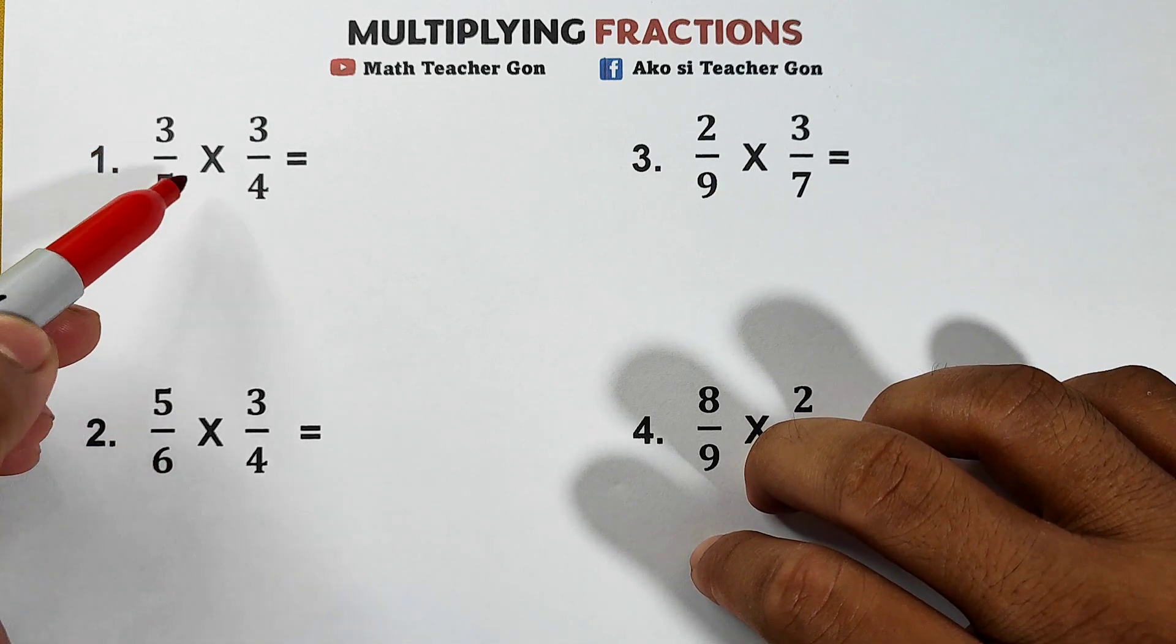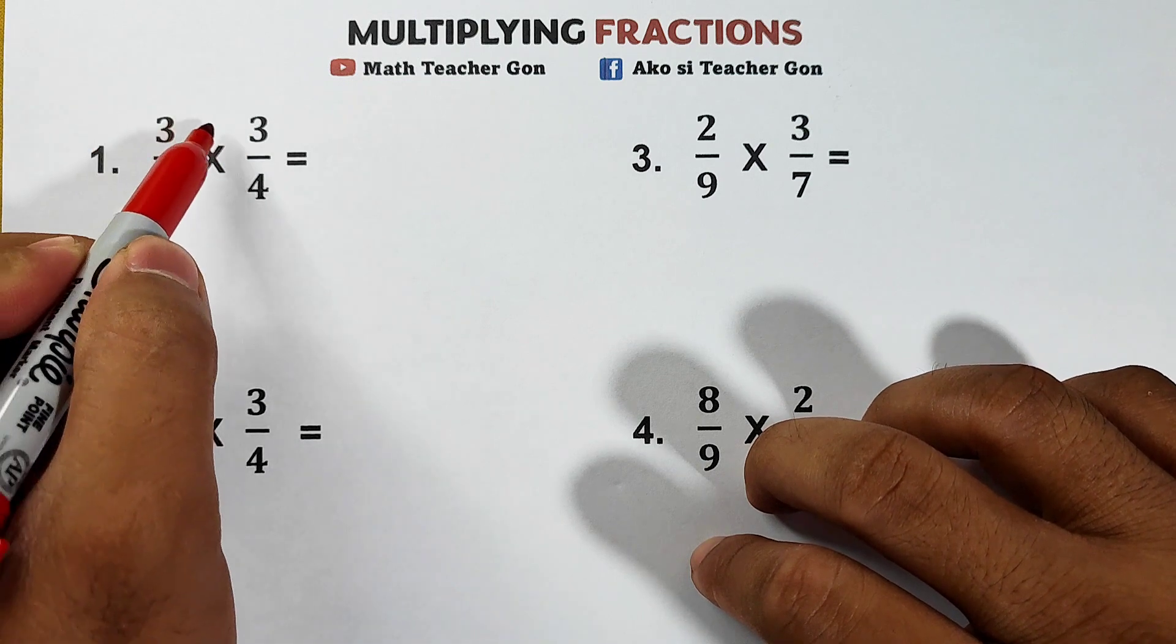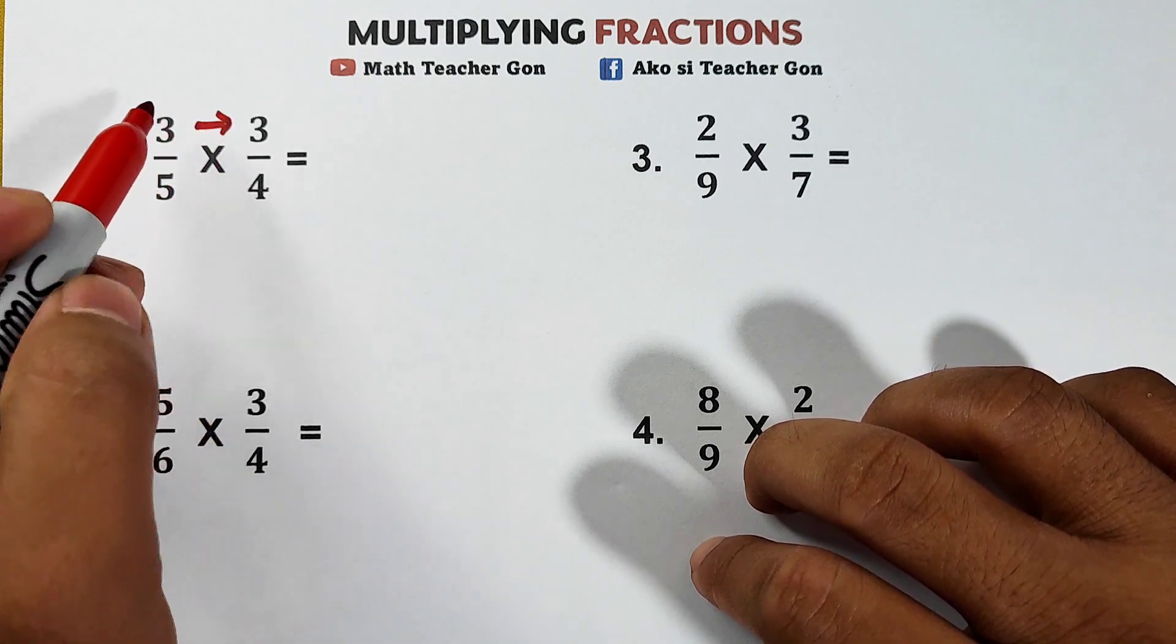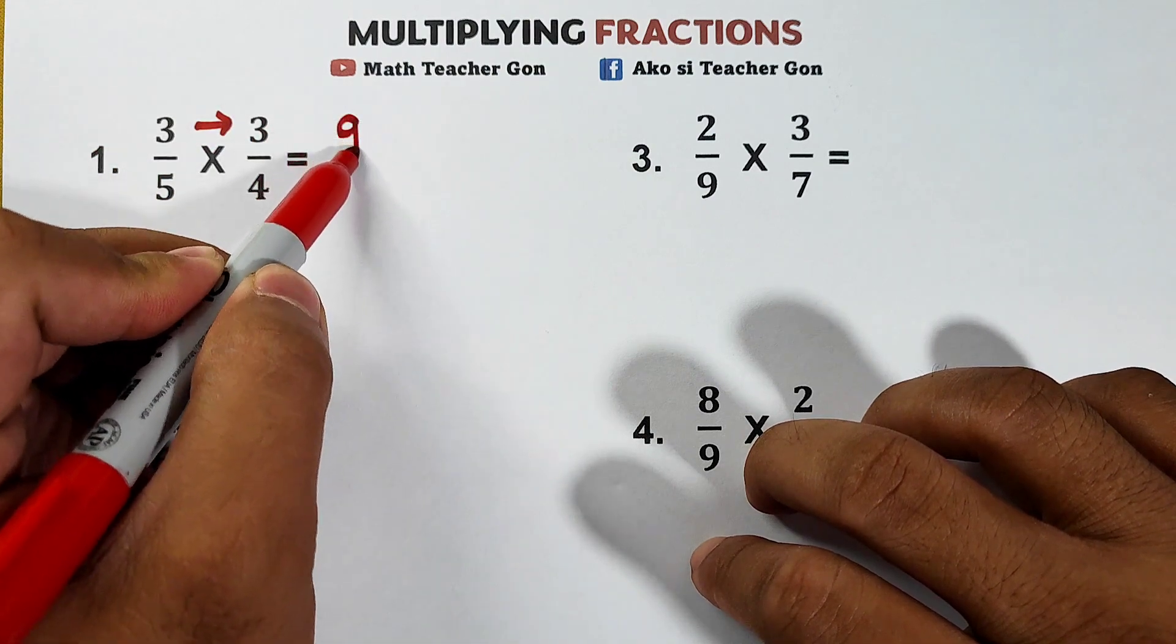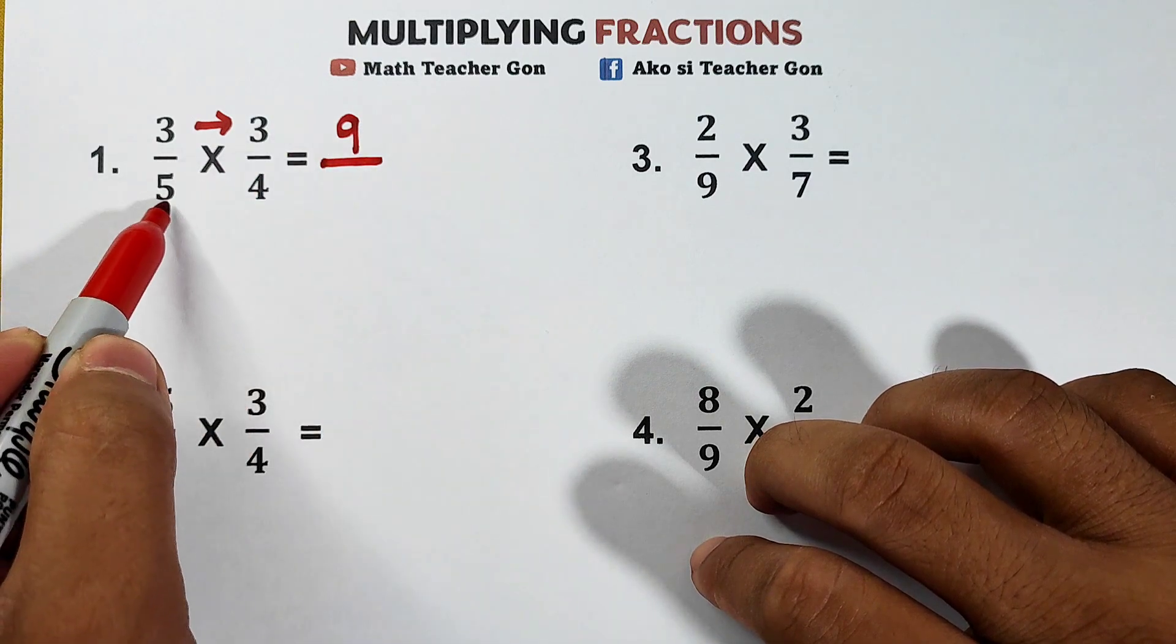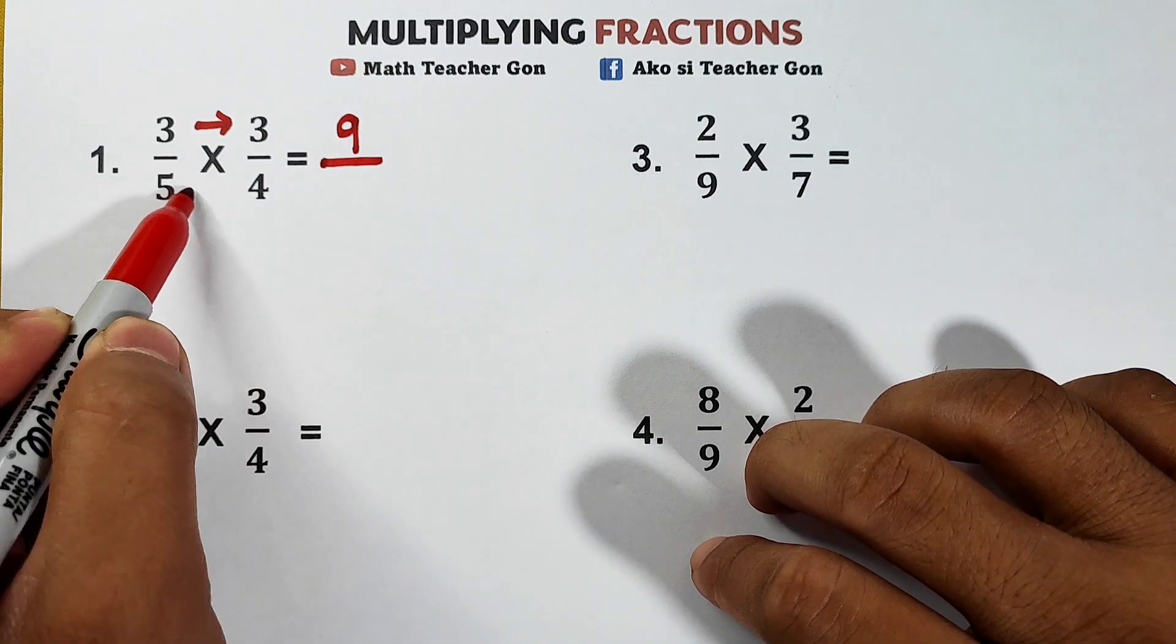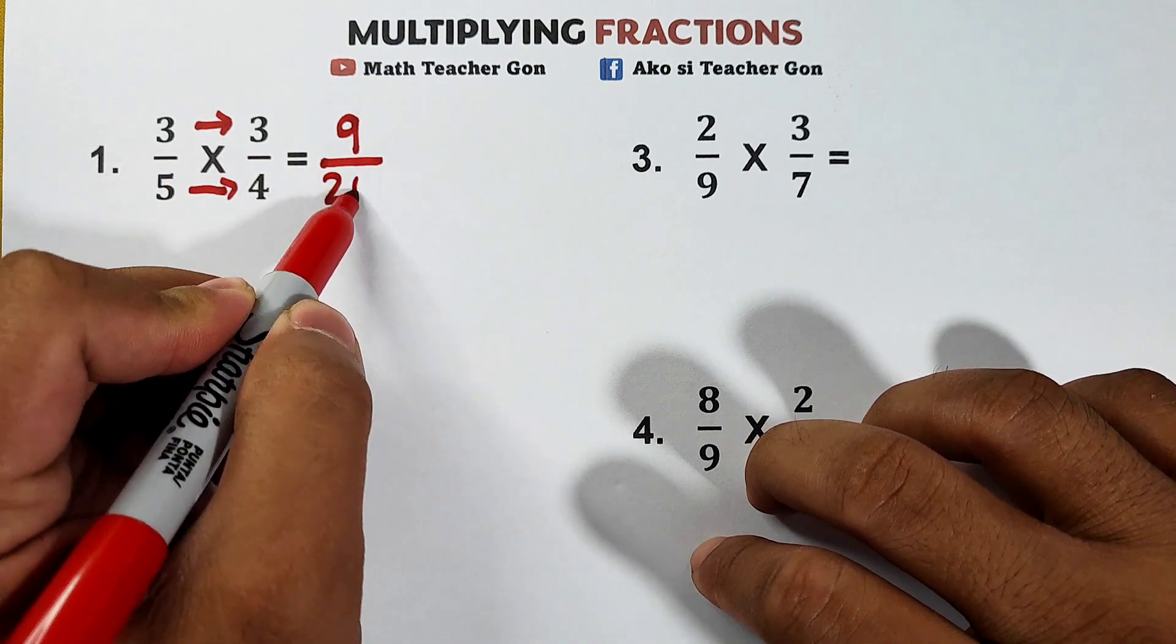We have 3 over 5 times 3 over 4. First, you need to multiply the numerators. What we have here is 3 times 3. We have the answer of 9 over your denominators 5 and 4, 5 times 4, that is equal to 20.